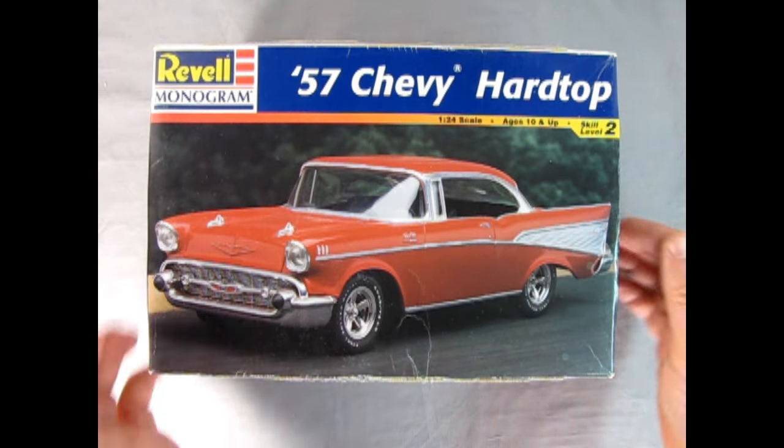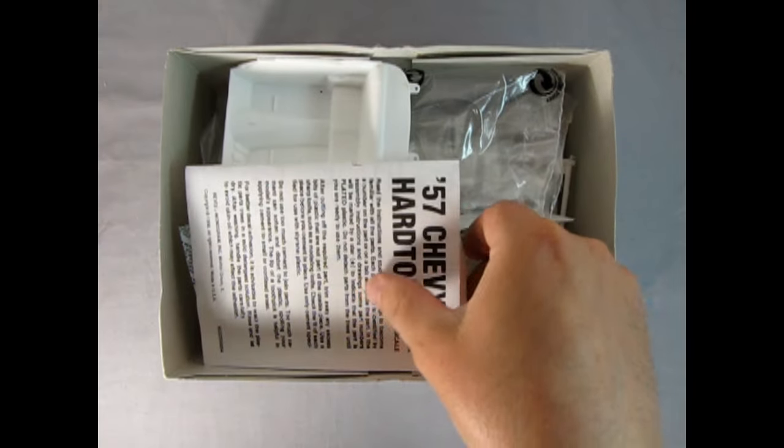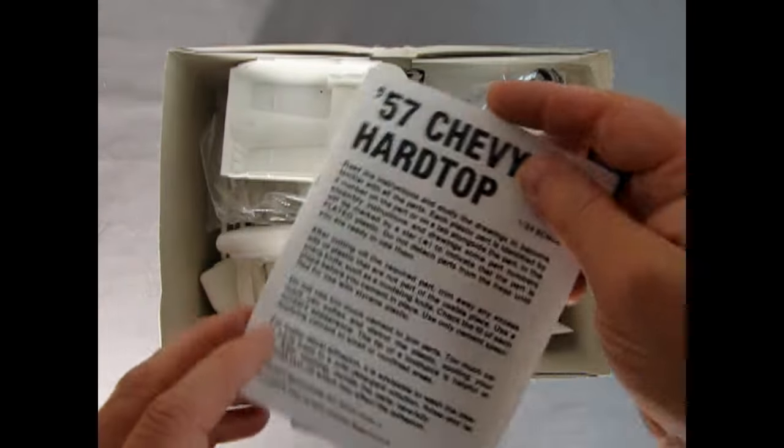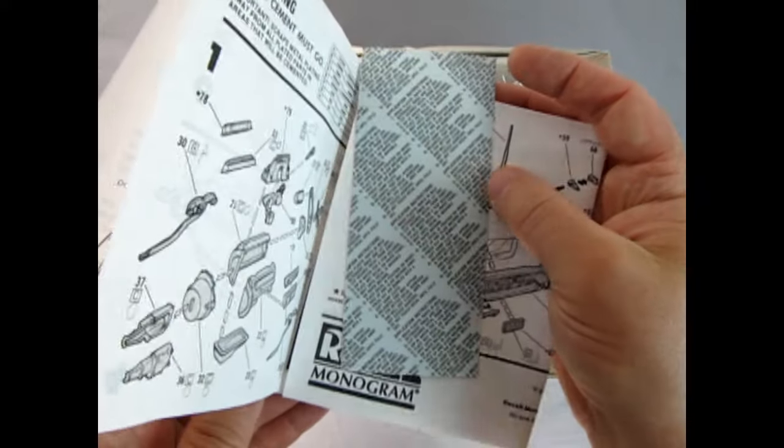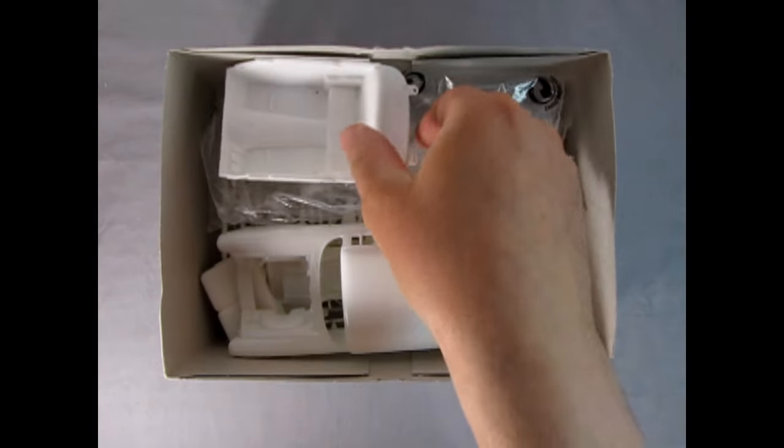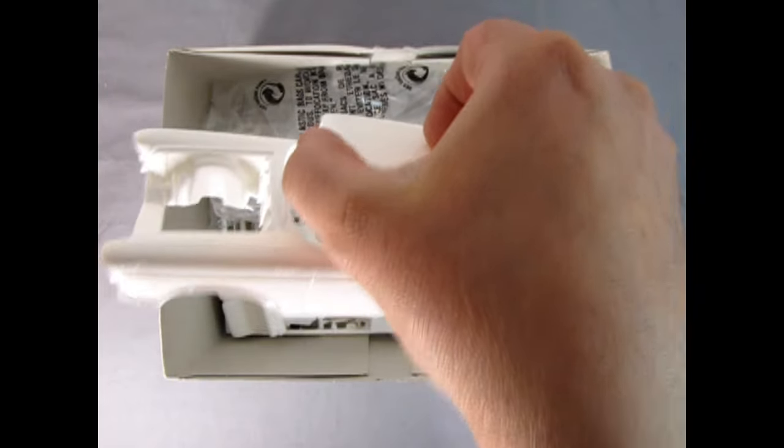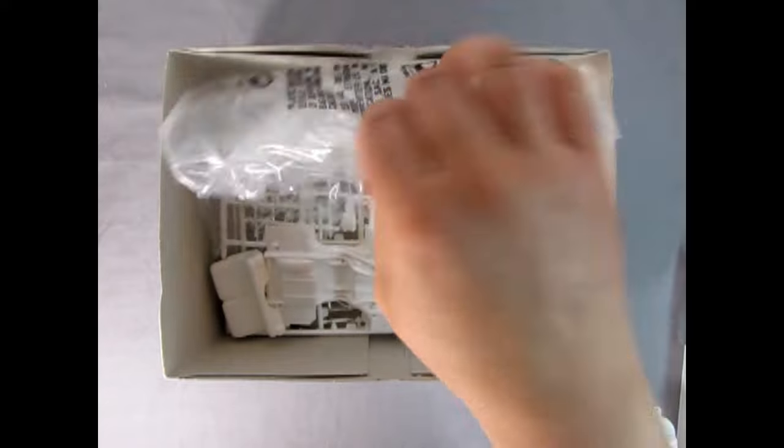Now we can open up this model car and see what's inside the box. And here we have our simple instruction sheet and inside are the decals. So I'll let Danny the dog show those to you. And then we have the interior tub. We've also got our body which is really nice. There's the glass in the bag.